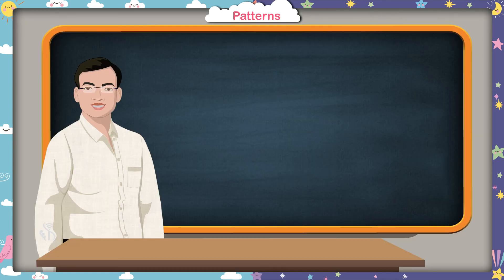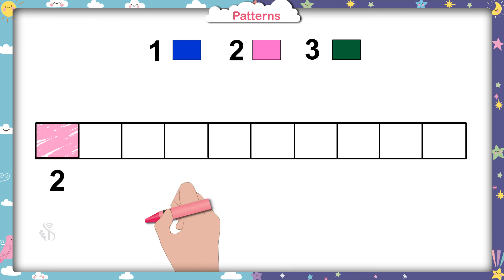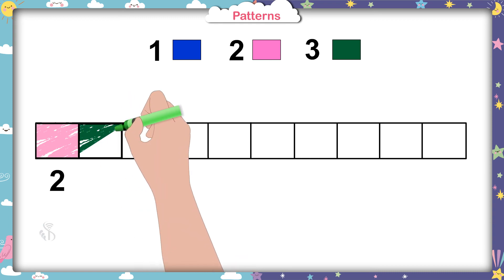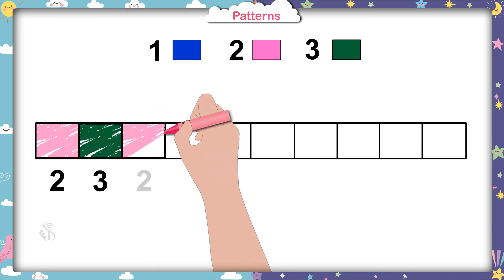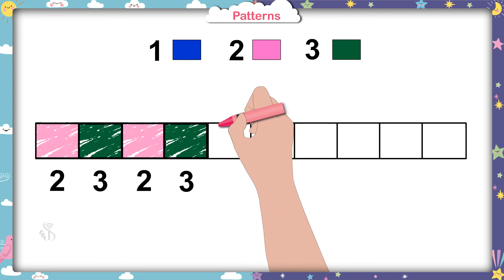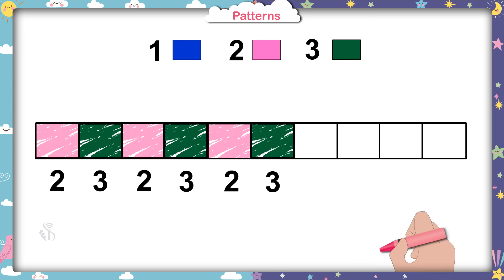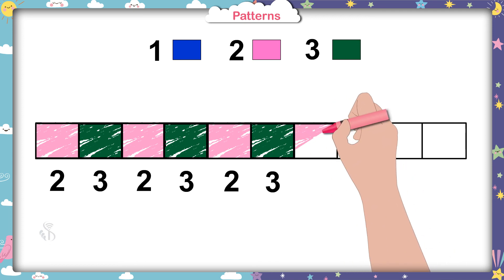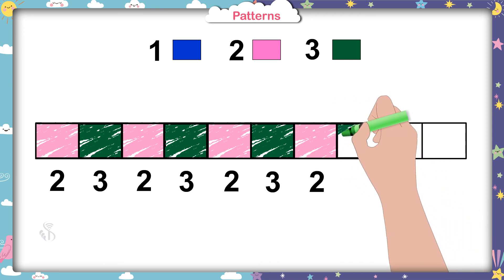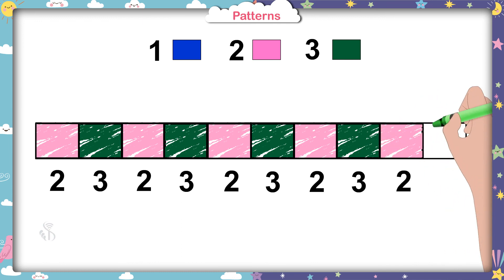Now you have to color this second line: pink, two; green, three; pink, two; green, three; pink, two; green, three; pink, two; green, three; pink, two; green, three.